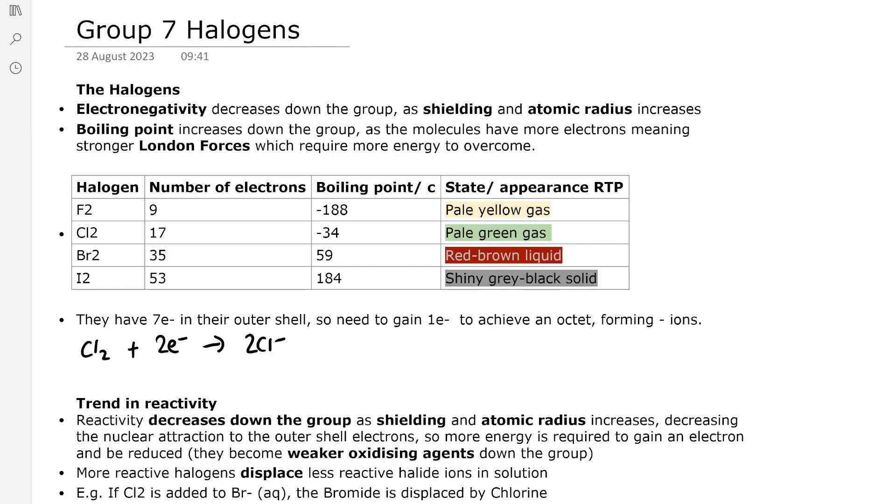At room temperature and pressure, fluorine is a pale yellow gas, chlorine is a pale green gas, bromine is a red-brown liquid because it has a high boiling point, and iodine is a shiny grey-black solid because it has a very high boiling point.